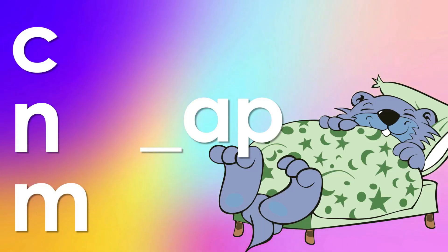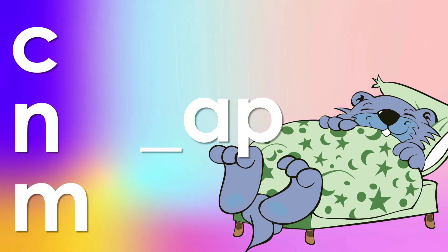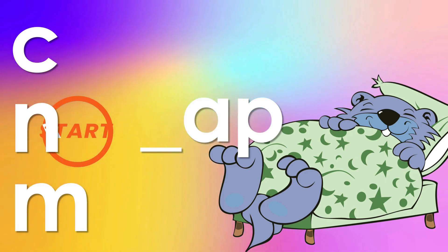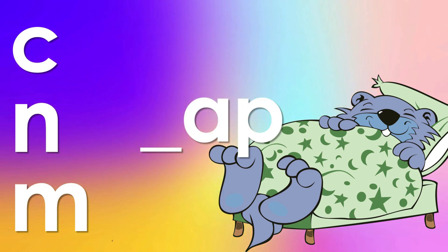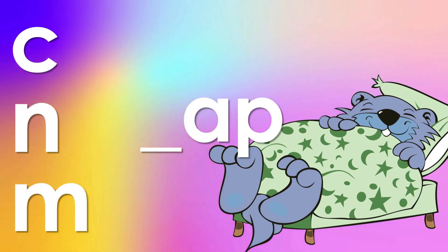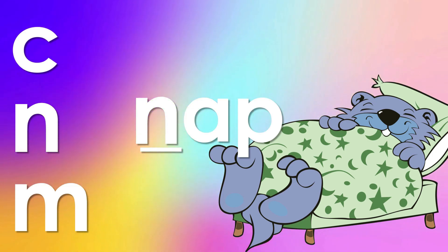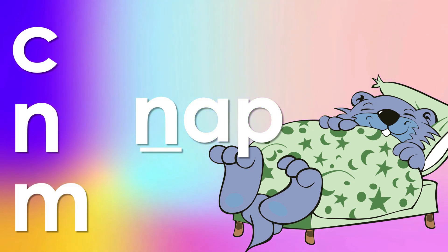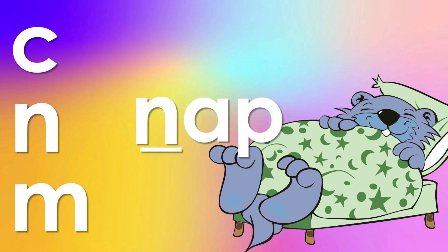Which letter do I add to make the word nap? Do I add the letter C like in cat, the letter N like in numbers, or the letter M like in mom? You decide. The letter N makes an N sound. When you add the N sound to the AP sound, you get N-AP: nap.